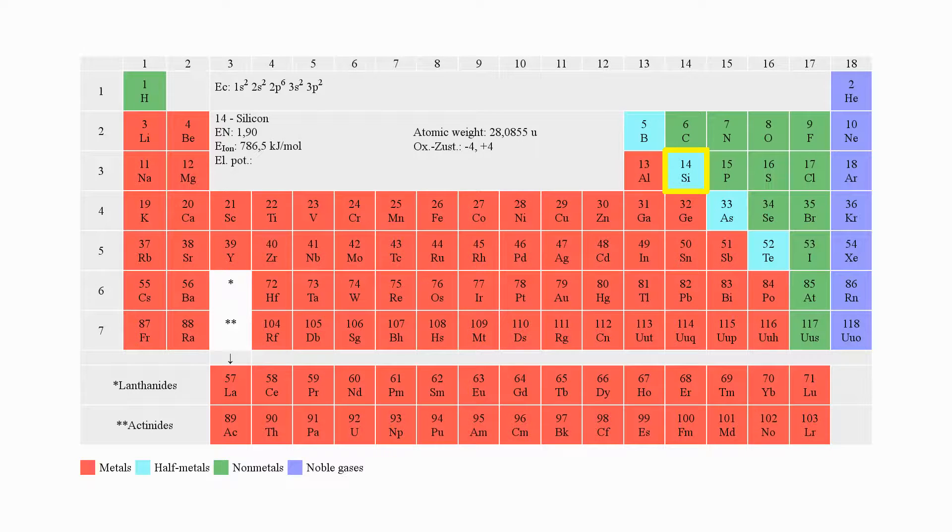The atomic number of silicon is 14, meaning a neutral silicon atom features 14 positively charged protons inside its nucleus and 14 negatively charged electrons at its atomic shell. The number of neutrons fluctuates between 14 and 16 in non-artificial silicon.